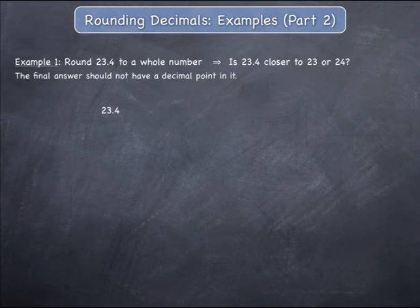Write the starting number and draw a line where the number needs to be cut off, which in this case is at the decimal point itself. Look at the digit immediately after the line and ask yourself: is this digit equal to or larger than 5?